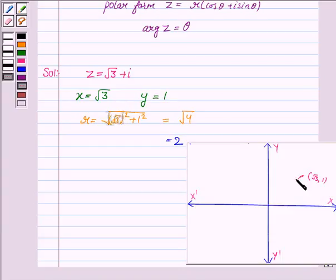So this distance is 2, and we have to obtain the value of theta, right? Now z in the polar form is given by 2 into cos theta plus iota sin theta, because r is 2.